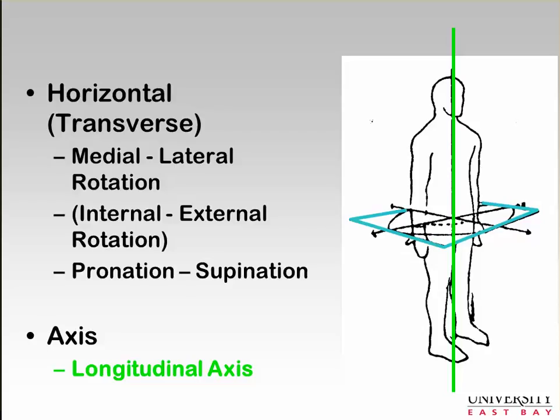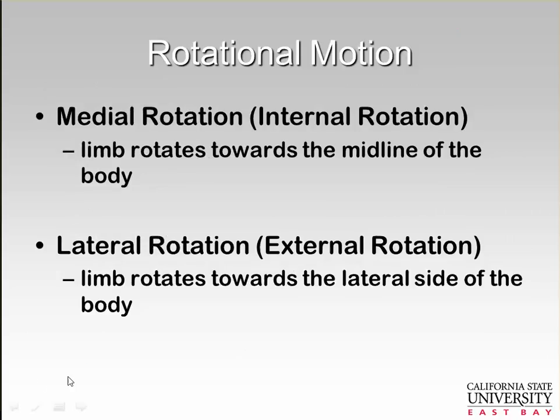The axis for the horizontal or transverse plane is a pole going through the midline of your head—it's like you're doing a pirouette, so we can rotate. The motions are: medial rotation or internal rotation, where the limb rotates toward the midline of the body, and lateral rotation or external rotation, where the limb rotates towards the lateral side of the body.